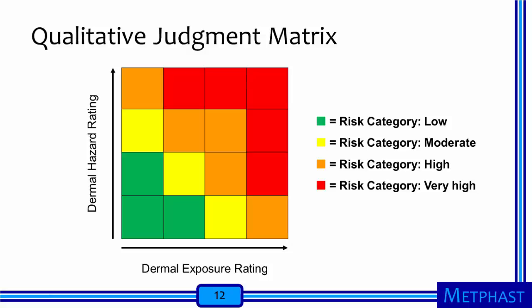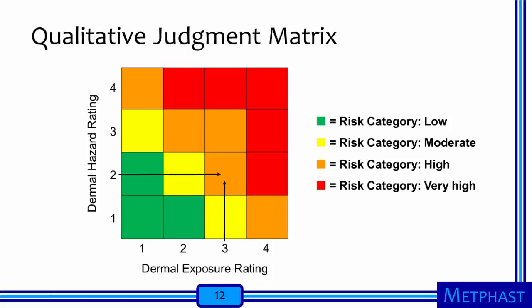This diagram shows a qualitative judgment matrix with a dermal hazard rating on the vertical axis and a dermal exposure rating on the horizontal axis. As the dermal exposure and hazard ratings increase, the risk level increases from green or low risk, through yellow or moderate risk, and orange or high risk, to red or very high risk. For example, a hazard rating of 2 and an exposure rating of 3 would place us in the orange square — the high risk category — and we could make exposure control decisions based on this.